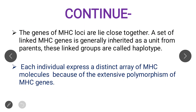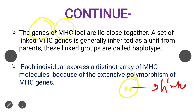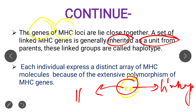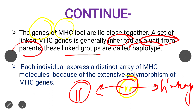The genes of the MHC are closely linked together. This means if these genes are inherited, they are inherited with each other — they do not independently assort. The formula of linkage is applied here. They are inherited as a unit from parents, and these linked groups are called haplotypes.